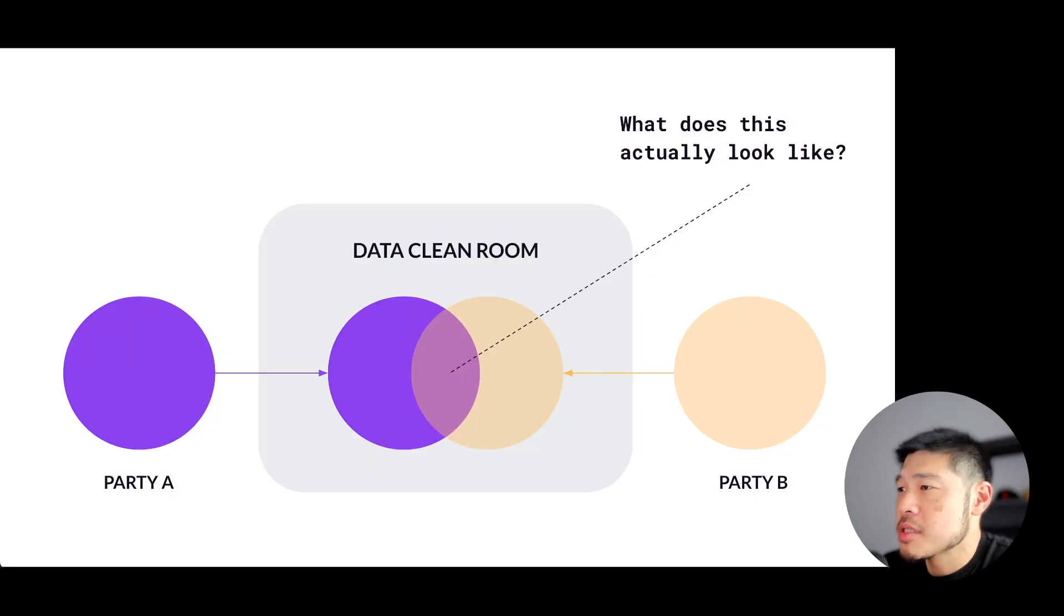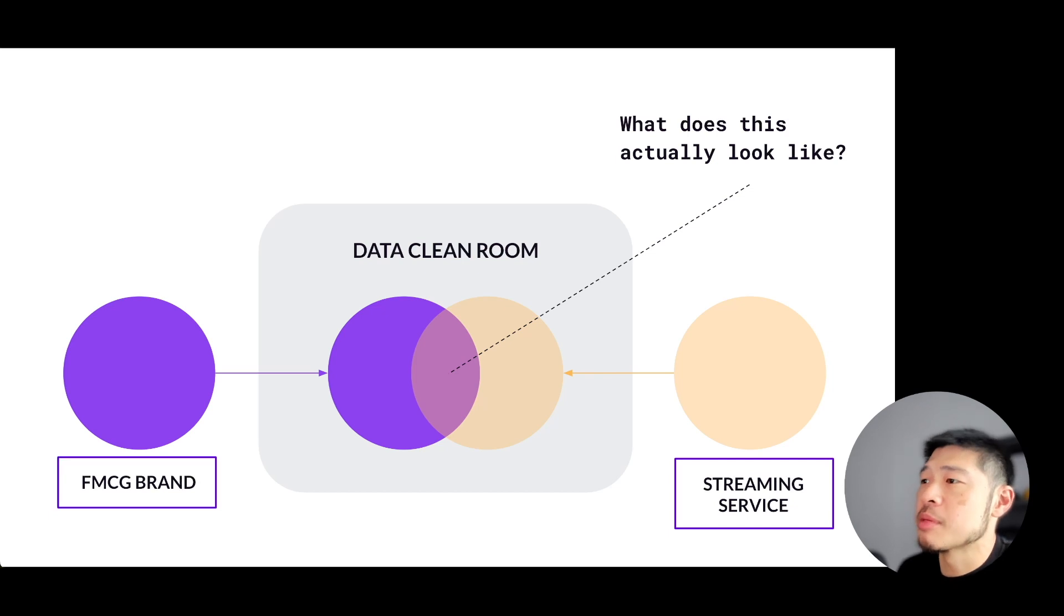So if you look at the slide, let's say the intersection area of the Venn diagram is where the data matching takes place. And to make the example a bit more real,